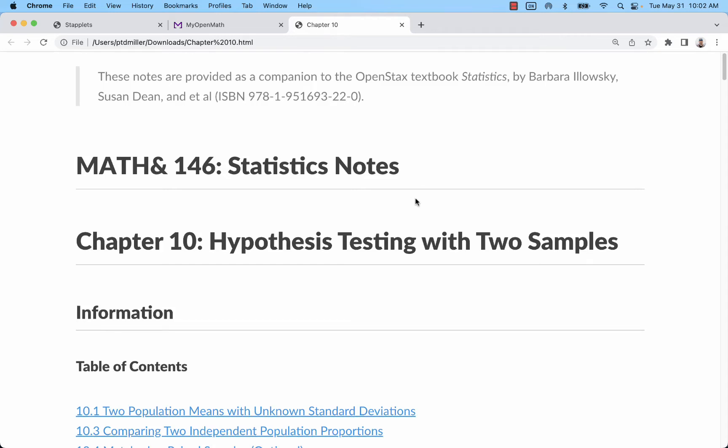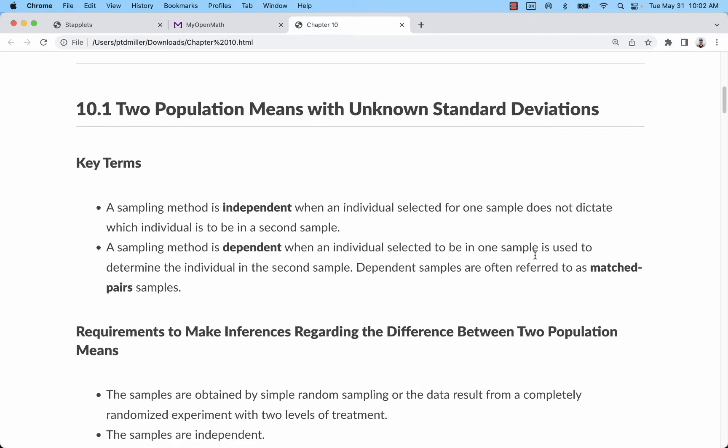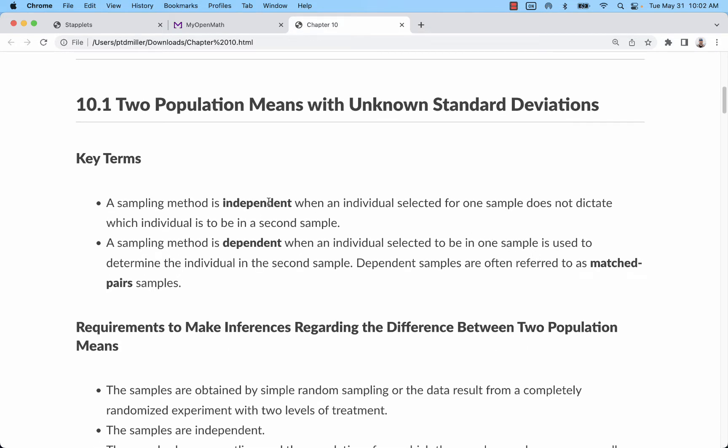We've done hypothesis testing and confidence intervals with one population or one sample. Now we're going to look at situations where we have two populations and it's unknown how those relate. We might want to do a confidence interval describing the difference between two population means, or do a hypothesis test, make a claim about how those population means or proportions relate. We have a couple different scenarios that can happen. What we're going to focus on here is independent populations, independent samples.